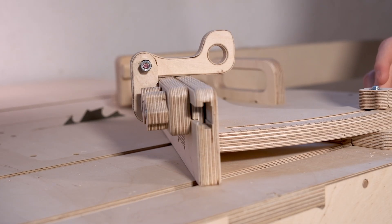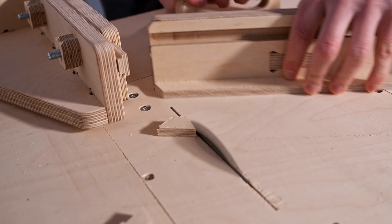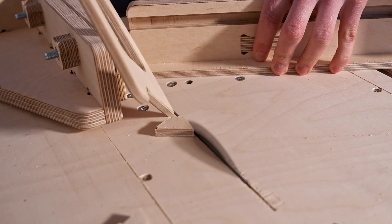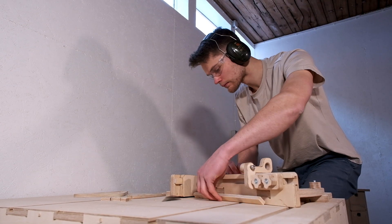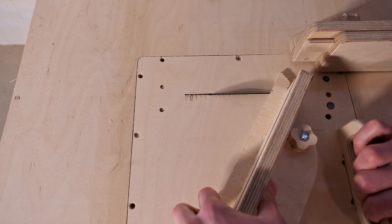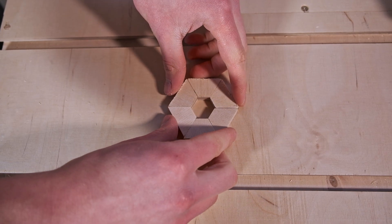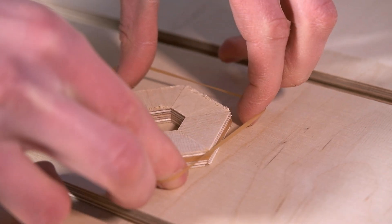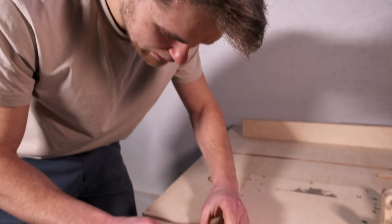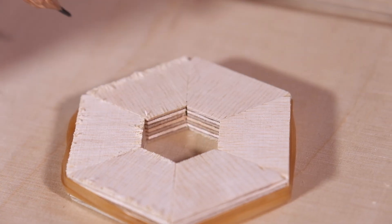It was time to set the angle for the segments on the miter gauge. I set the angle at 30 degrees and made the cuts. After I had made six of the segments I laid them out on the table in a circular pattern and put a rubber band around them.